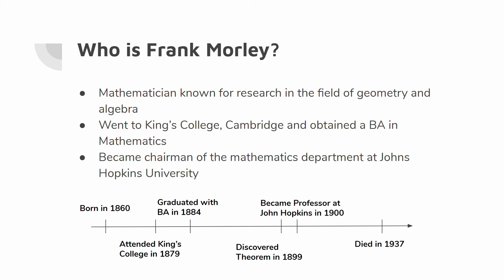The theorem is very recent as it was discovered in 1899. After its discovery, he became the chairman of the mathematics department at Johns Hopkins University. There have been many proofs developed since his discovery. For the purpose of this video, we will be focusing on the proof provided by Brian Stonebridge.